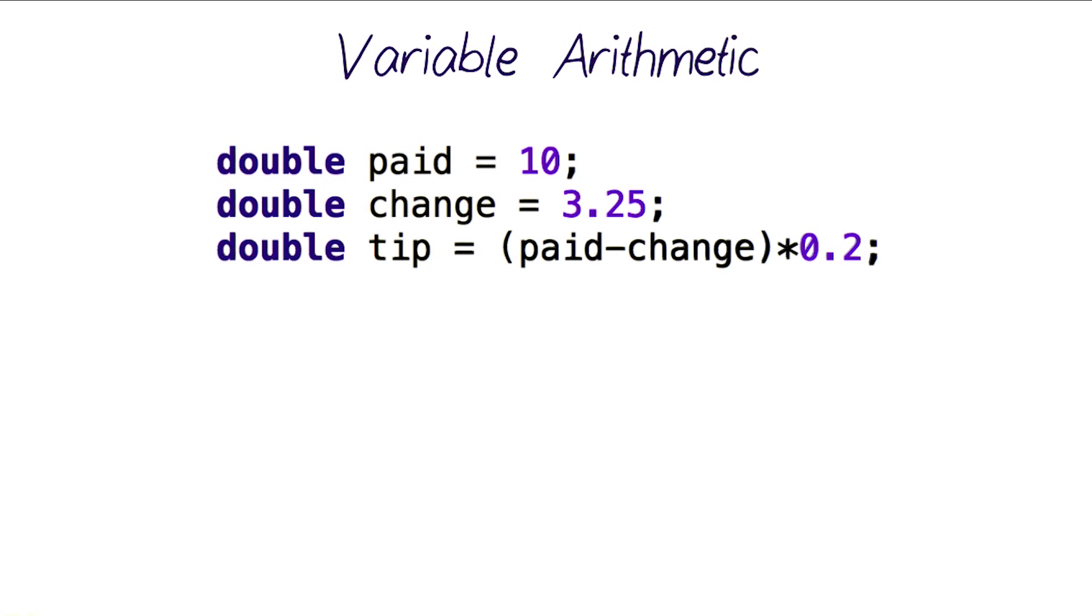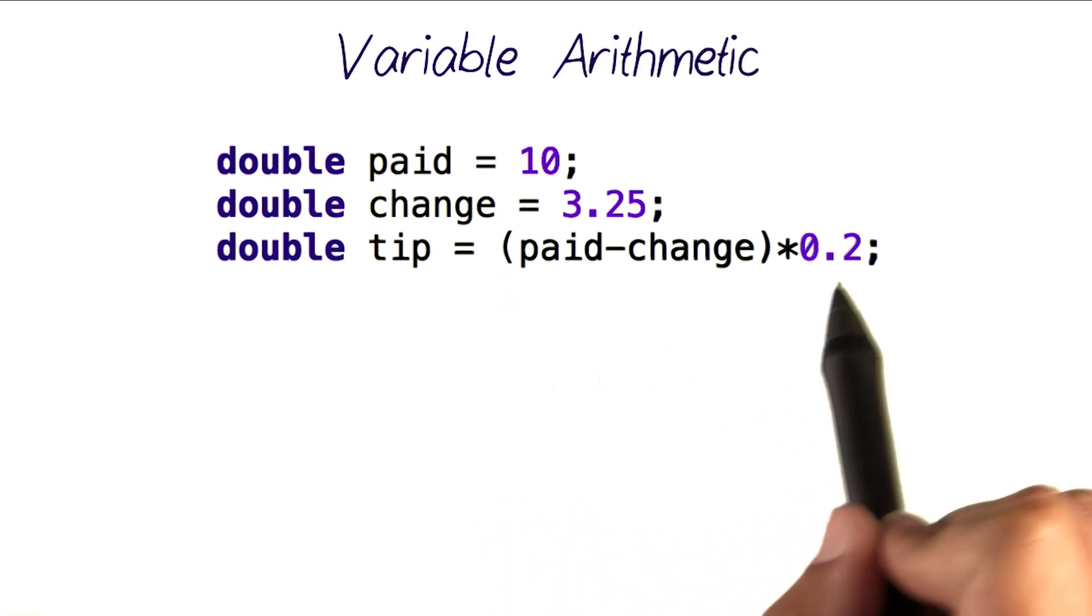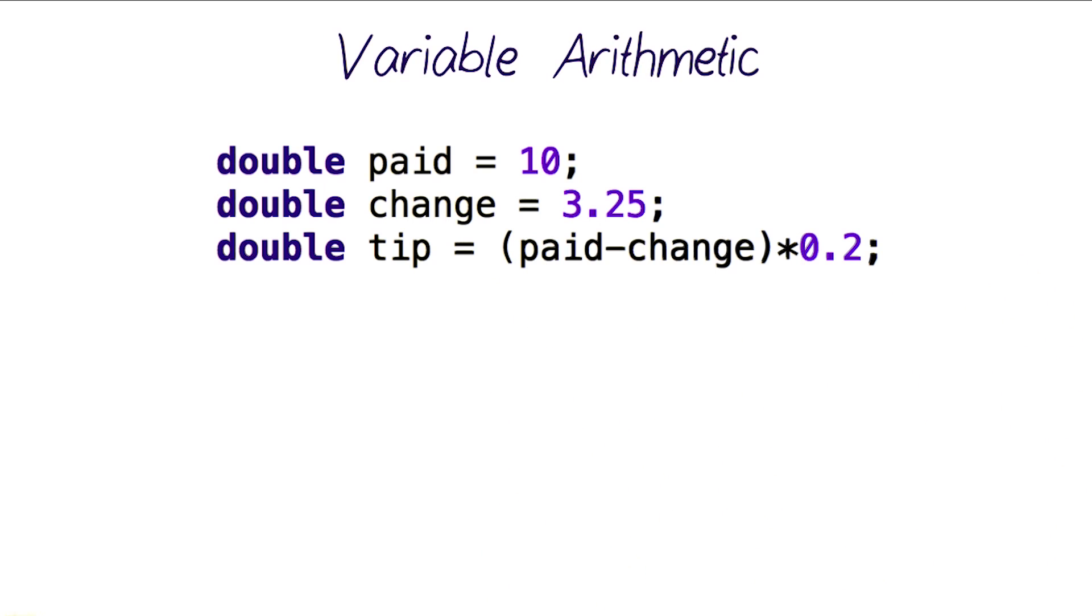We can even combine more arithmetic operations in one statement. For example, if I wanted to calculate the amount of tip I should leave, based on the amount that I've paid and the change I got back, I could just subtract change from the amount paid and multiply that entire result by 0.2, which is 20%.